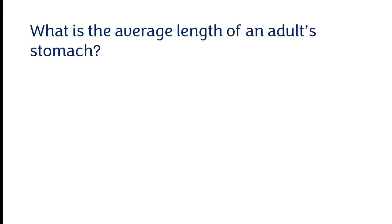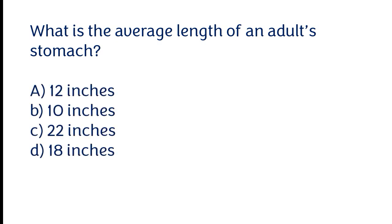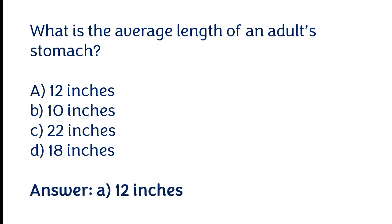What is the average length of an adult stomach? Options: a) 12 inches, b) 10 inches, c) 22 inches, d) 18 inches. The correct answer is option A. The average length of an adult stomach is about 12 inches.